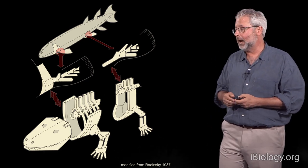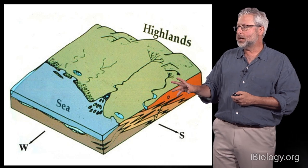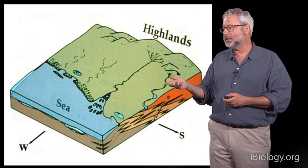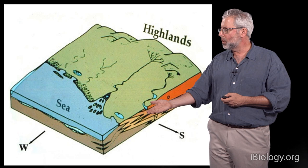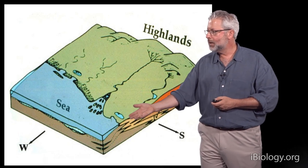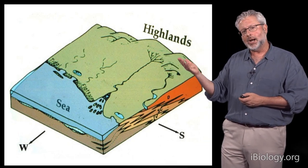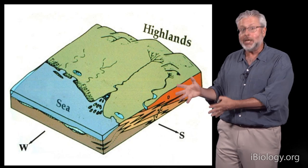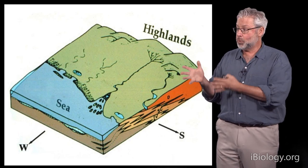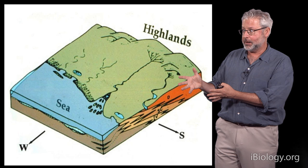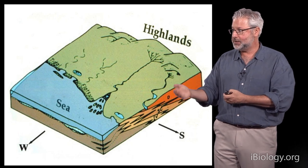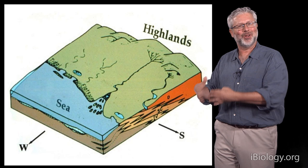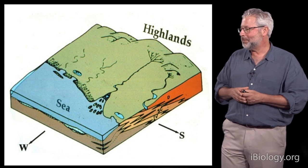To understand the origin of tetrapods, we need to focus on environments like near-shore marine environments — ancient sea waves — but likewise ancient highlands. Delta systems turn out to be really perfect for us. Because when we have a system like this, we can sample ancient seas, ancient estuaries, ancient rivers and streams — the whole enchilada, as they say.